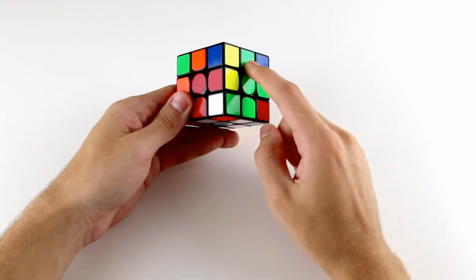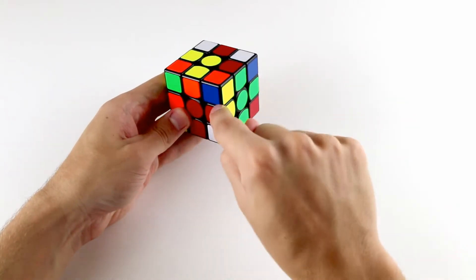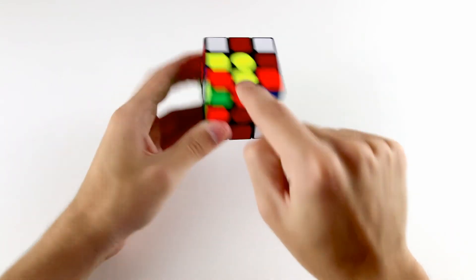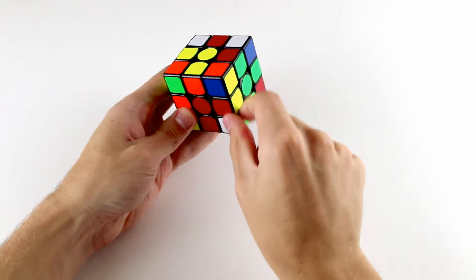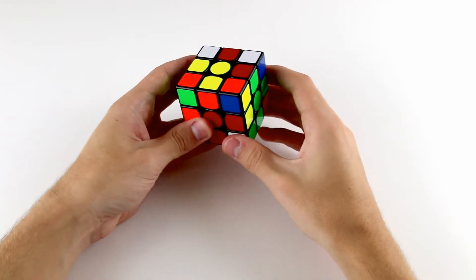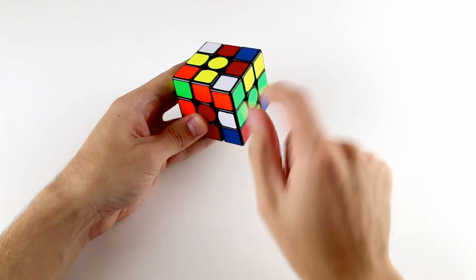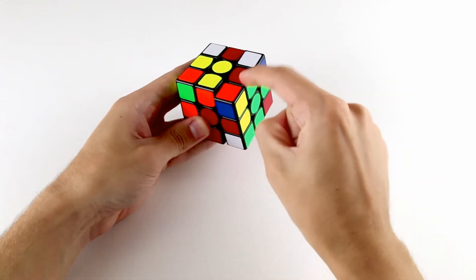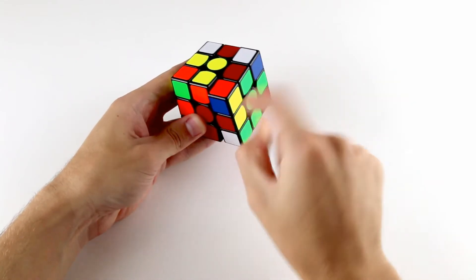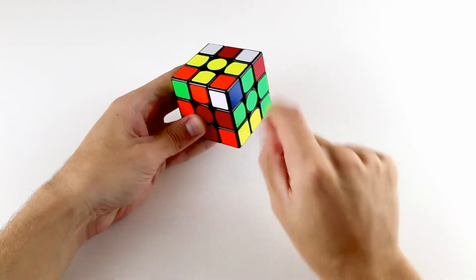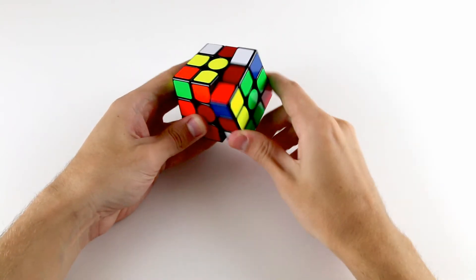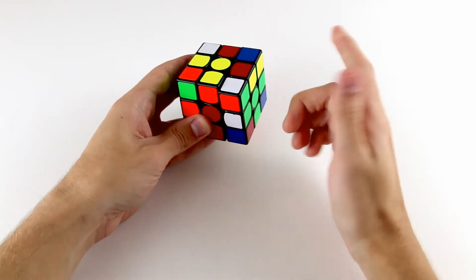From there we figure out where it needs to go. This one needs to go down here and this corner needs to also go down here, so they both belong in this slot. So then what we do, to hide the edge piece, we bring it away from the slot where it needs to go. This piece belongs here, so we don't hide it down here into its correct position, we hide it the other way, away from the slot.